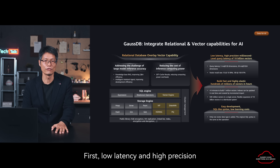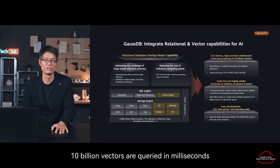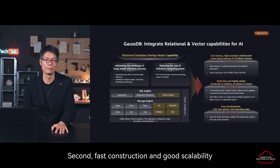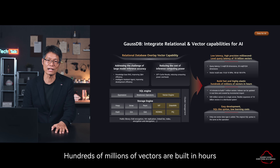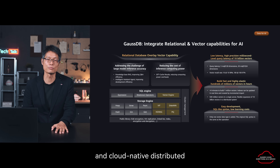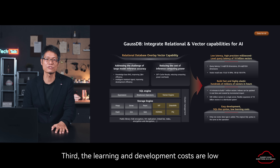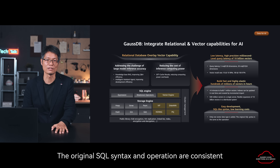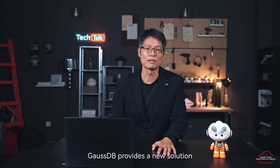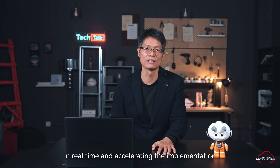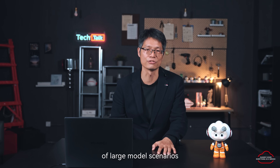Here are some highlights of the product. First, low latency and high precision: 10 billion vectors are queried in milliseconds, and the recall rate reaches as high as 99%. Second, fast construction and good scalability: hundreds of millions of vectors are built in hours, and a cloud-native distributed architecture enables elastic resource expansion. Third, the learning and development costs are low: only one vector data type needs to be added, and the original SQL syntax and operations remain consistent. GaussDB provides a new solution for analyzing high-dimensional data in real-time and accelerating the implementation of large model scenarios.